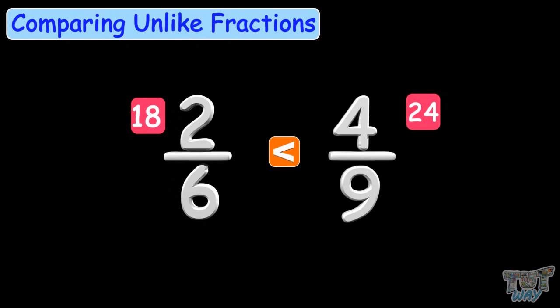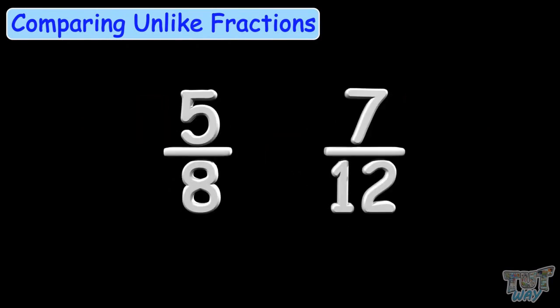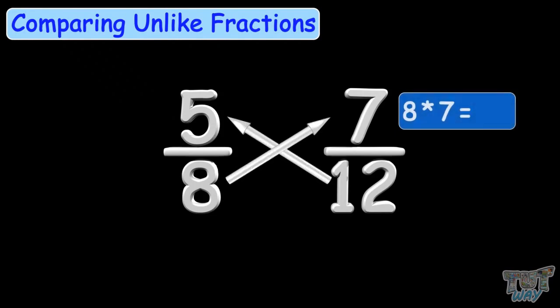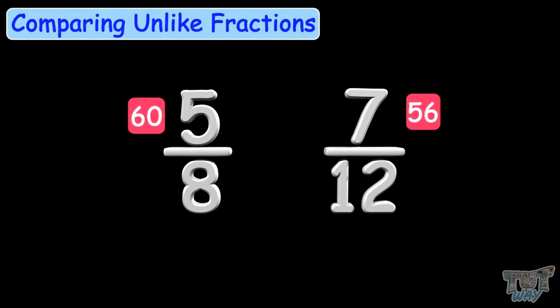Now let's compare 5 by 8 and 7 by 12. 8 multiplied by 7 equals 56, and 12 multiplied by 5 equals 60. We get a bigger number on this side, so 5 by 8 is the bigger fraction.